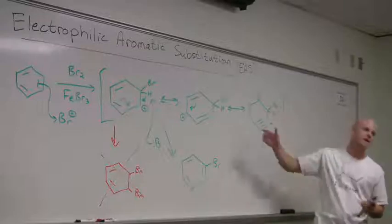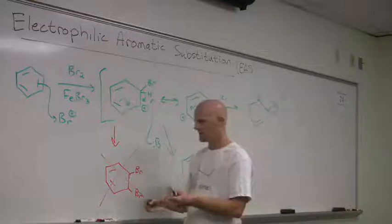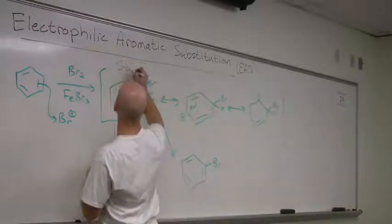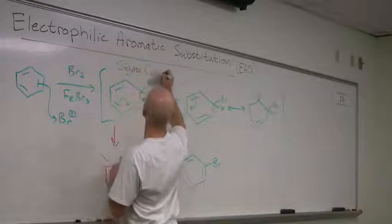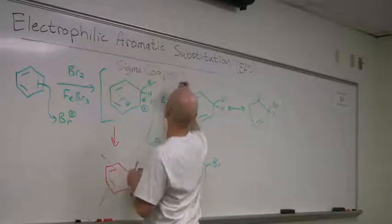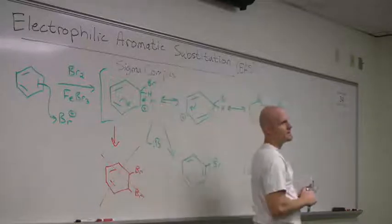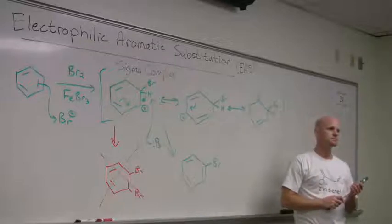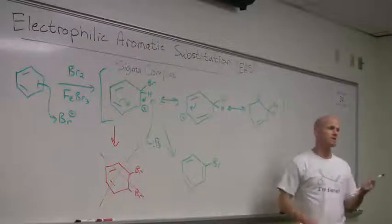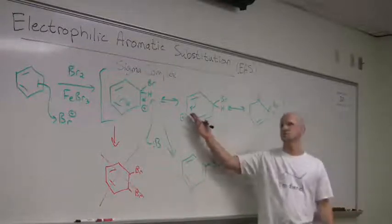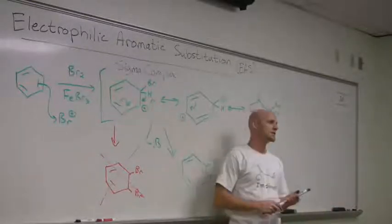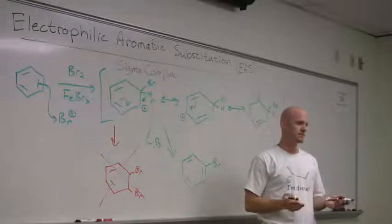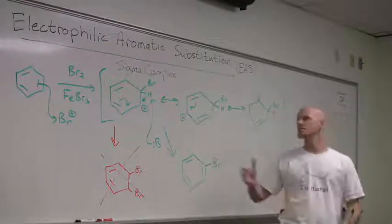This carbocation intermediate has a special name. You'll often hear it referred to as the sigma complex. Would you describe this intermediate as being electron rich or electron poor? Poor. It's electron poor. It does not have an electron. It's a carbocation. How do you stabilize something that is electron poor? Give it electrons. So, in this case, for EAS, we talk about electron donating groups or electron donors as stabilizing our intermediate.